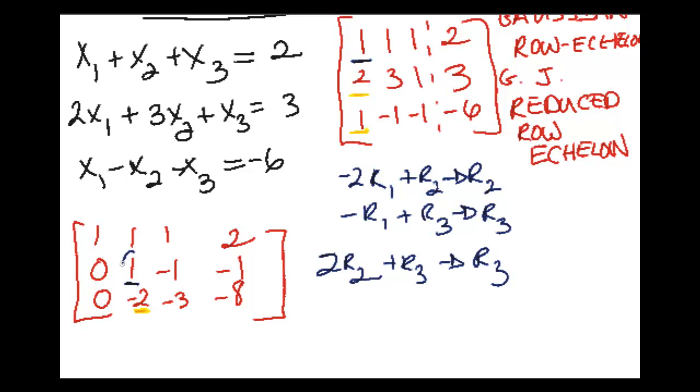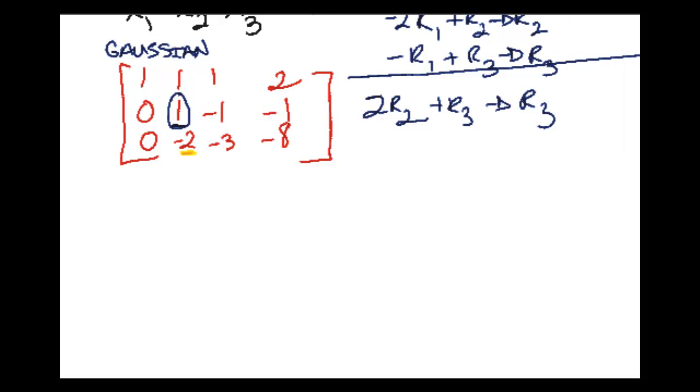Why did I switch to this one over here? Because I'm trying to make this a 0. Anytime I try to make this a 0 or this a 0, I need to use that corresponding leading one. So let's see what happens when we do those operations. Top row doesn't change. Second row doesn't change because that's my leading one row. And the third row is going to become 0, 0 when I do 2 minus 2, negative 5, and then -10.